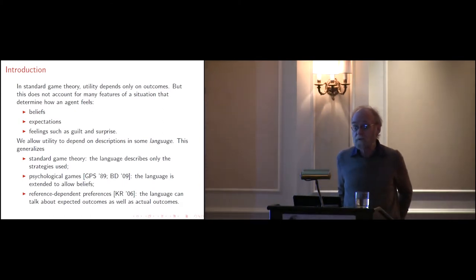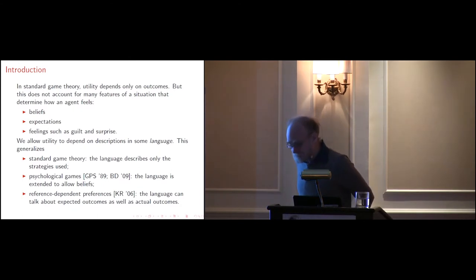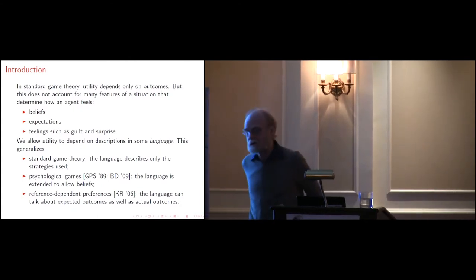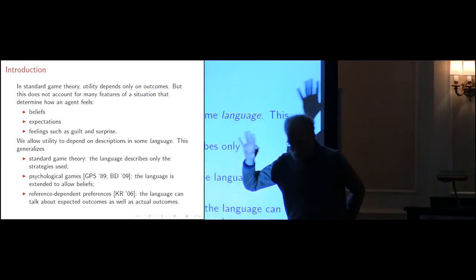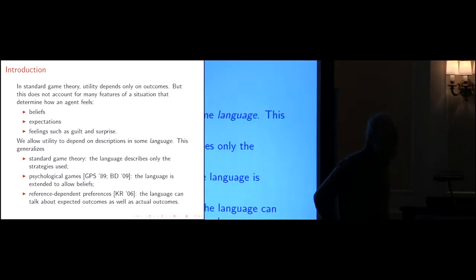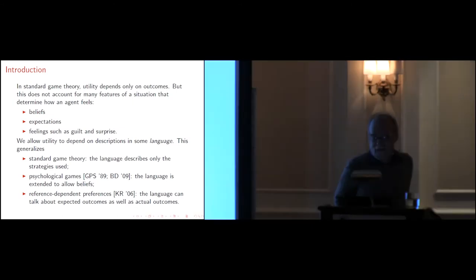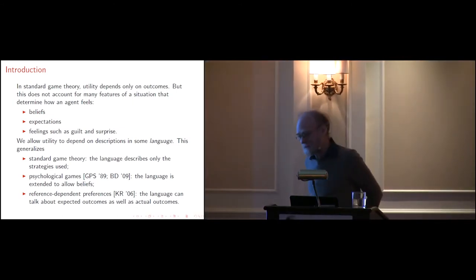There's something called reference-dependent preferences, which has been sort of a very big deal recently in the practical econ community. This is Kusage and Rabin. Matt Rabin is one of these people touted for a future Nobelist kind of thing. And in this case, the language can depend on expected outcomes as well as actual outcomes.